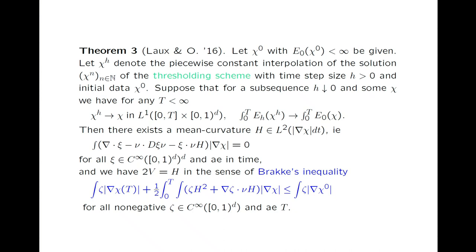For it to really characterize mean curvature flow in this sense — normal velocity equal to one-half of the mean curvature — you need everywhere the right constants. This constant one-half is exactly the right constant, coming from the two here, and that's the constant you need. Otherwise it would fail to characterize it, it would be a completely floppy condition. So keeping track of the constants is the right thing.